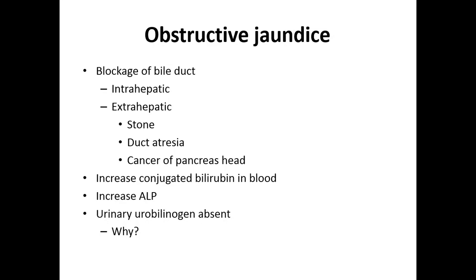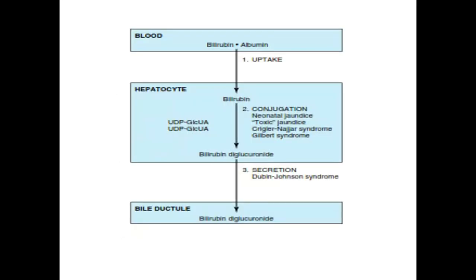The basic cause for the various types of jaundice: in pre-hepatic, more bilirubin production by hemolysis; in hepatic, defect in conjugation or sometimes excretion; and in post-hepatic, obstruction of the bile duct. Based on blood investigation — which type of bilirubin is increased — we can differentiate between the three types of jaundice.